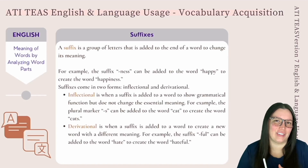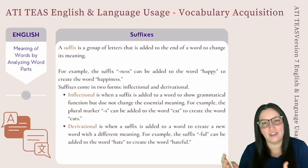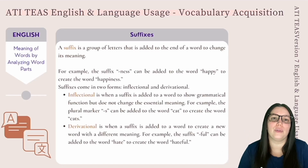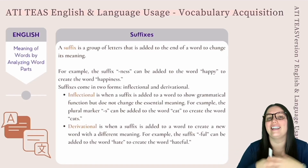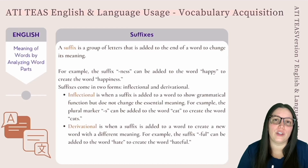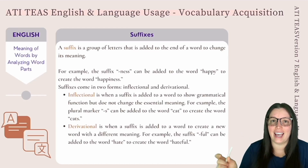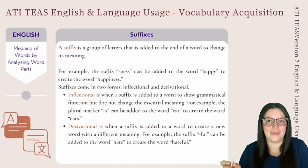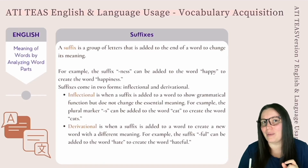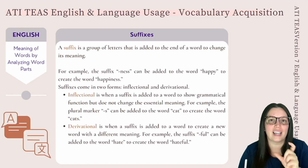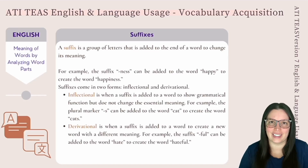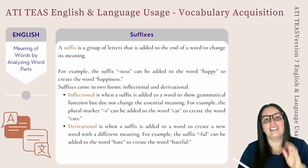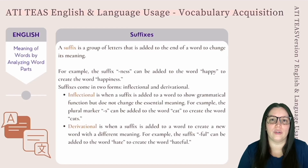Now we have suffixes. Just like prefixes, the only difference is that a suffix is added to the end of the word to change its meaning. For example, the suffix "-ness" can be added to the word "happy" to create "happiness." Note that when you add "-ness," we change the y to an i. Make sure to check the previous video where we discussed rules for changing letters when adding prefixes and suffixes. Suffixes come in two forms: inflectional and derivational.